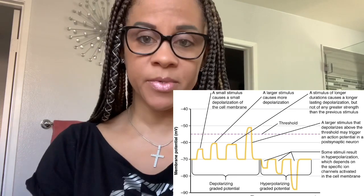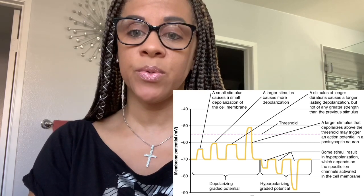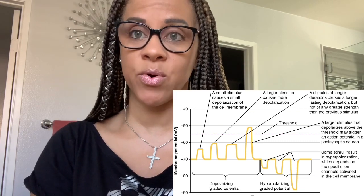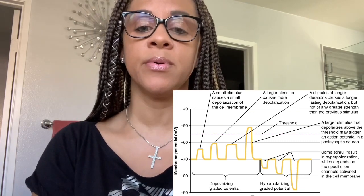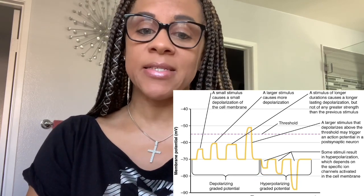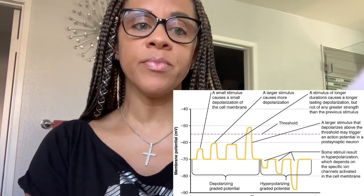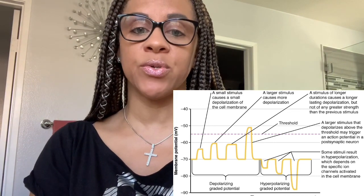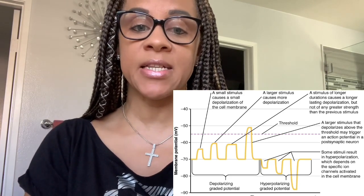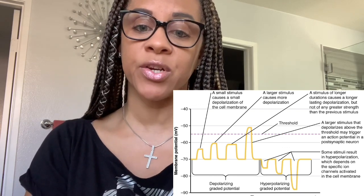There are three primary forms of graded potential. There is the receptor potential, which is a graded response to the stimulus that may be depolarizing or hyperpolarizing. The neuron is delivering the message across the synapse to the post-synaptic neuron. Then there is the post-synaptic potential, which is the electric potential at the dendrite or the surface of the neuron after an impulse has been reached across the synapse.